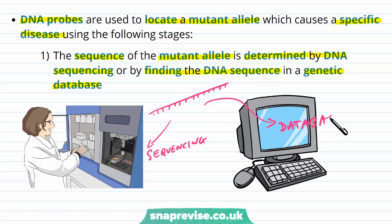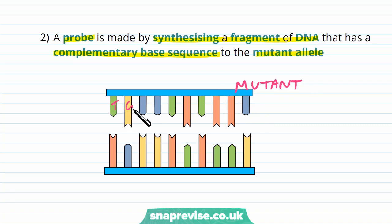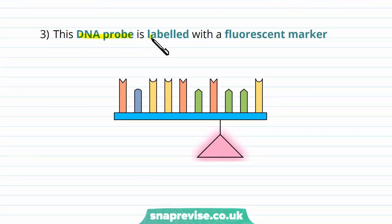Then a probe is made by synthesizing a fragment of DNA with a complementary base sequence to the mutant allele. For example, if the mutant allele has a sequence T-G-C-C-T-A, the probe must be A-C-G-G-A-T — complementary to it. This DNA probe is then labeled with a fluorescent or radioactive marker. The mutant allele itself is not labeled; only the probe gets the marker.